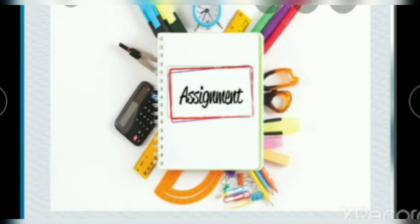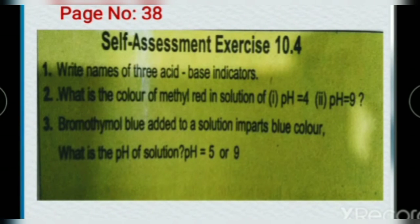This is your assignment time. Page number 38, self-assessment exercise 10.4. Write names of three acid-base indicators. You can tell, yes. Previously we have discussed and in table it is given. Question number 2: What is the color of methyl red in pH 4 and pH 9? pH 4 means yes, it is acidic, while pH 9, yes, it is basic. Question number 3: Bromothymol blue added to a solution imparts blue color. What is the pH of solution, pH 5 or pH 9?